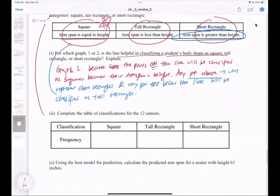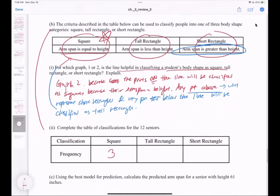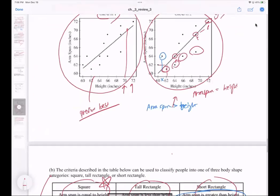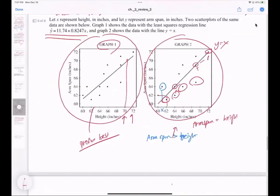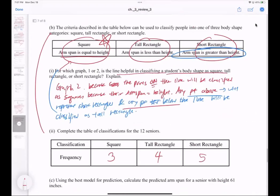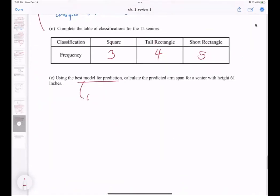Using this info, I can go to this graph and physically count them. There are one, two, three points on the line, so three will be classified as square. The tall rectangles will be the ones with points below the line - that's one, two, three, four. The ones above it will be classified as short - one, two, three, four, and then five. That should be fine.